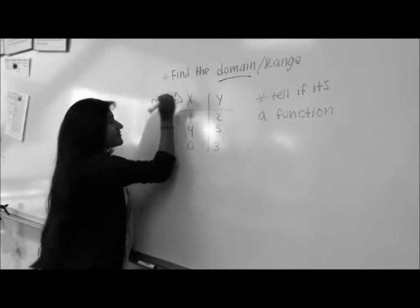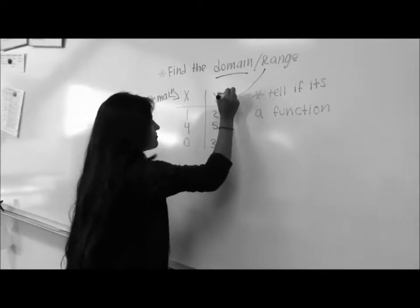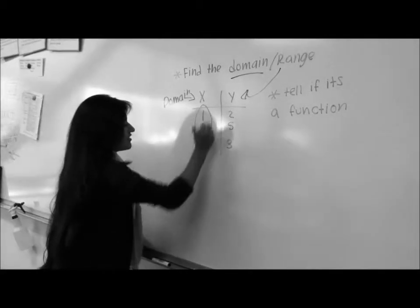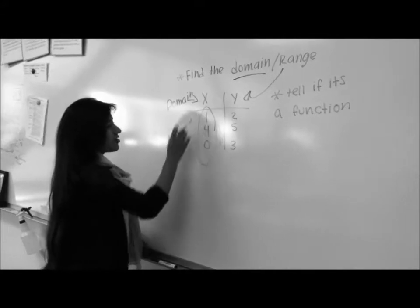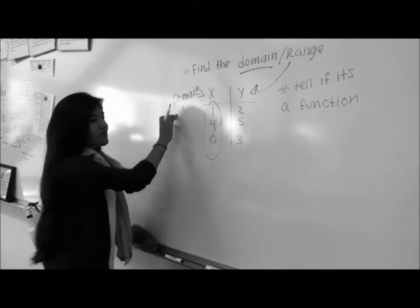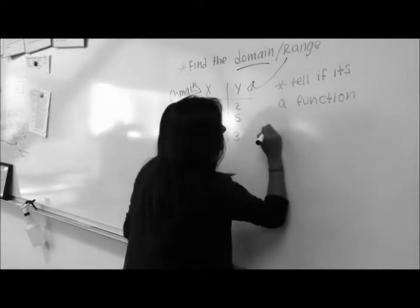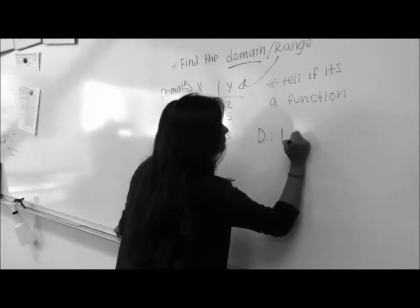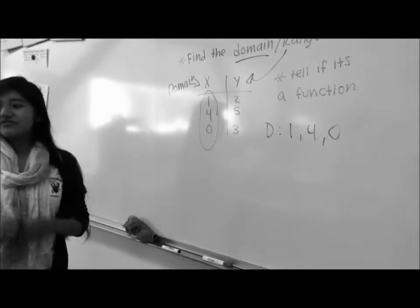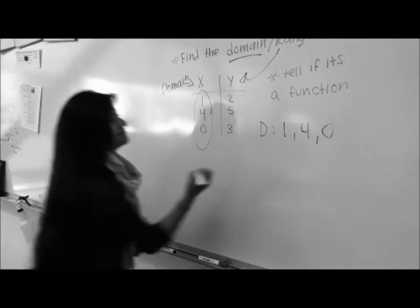So the domain, this basically stands for x. So this is the domain. Okay. And the range is the y. So all the numbers that are here are part of the x, right? So it also means that it's part of the domain. So domain equals 1, 4, and 0. And do you know what the range equals? Oh, 2, 5, 3. Correct.